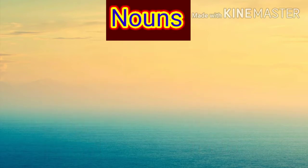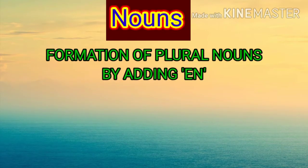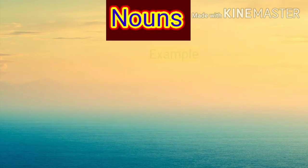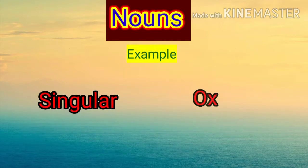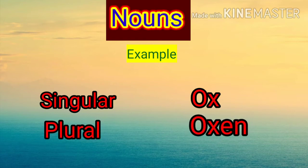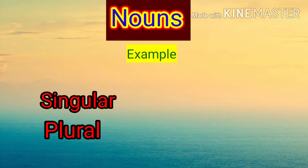Next heading: formation of plural nouns by ending -en. Plural nouns may be formed from singular nouns by adding -en to the singular. For example: ox — plural will be oxen (O-X-E-N); child — children.